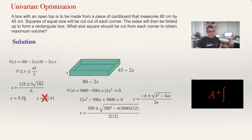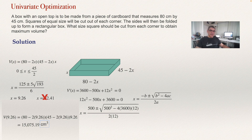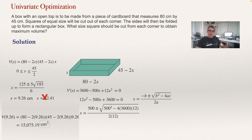Now that we know this is a maximum, substitute x equals 9.26 into the volume formula. The maximum volume will be: 80 minus 2 times 9.26, times 45 minus 2 times 9.26, times 9.26. Using a calculator to compute each subtraction and then multiplying, the maximum volume is approximately 15,075.19 cubic centimeters.